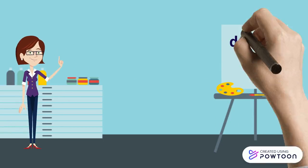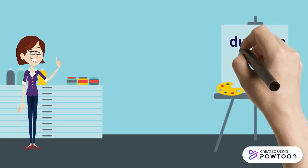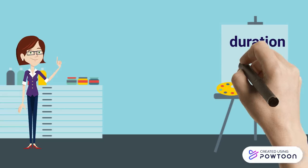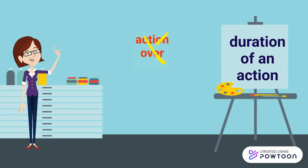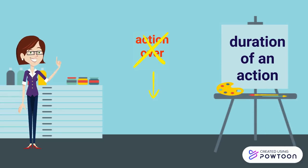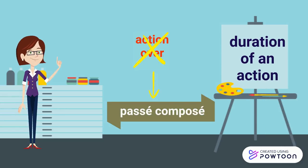The imperfect stresses the duration of an action, not the fact that this action is over. This is the function of the passé composé and other past tenses.